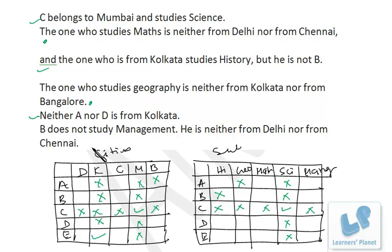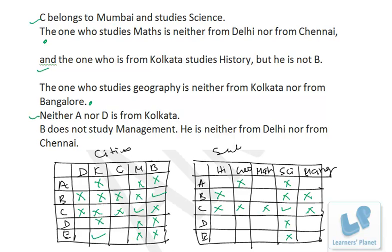Statement: B does not study Management, and B is neither from Delhi nor from Chennai. That means B must be from Bangalore, so all other city options for B are cancelled. Going back: the one from Kolkata studies History, and we found E is from Kolkata — so E studies History.